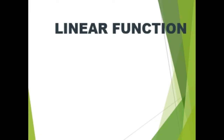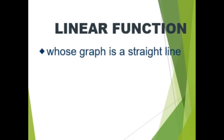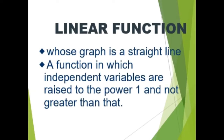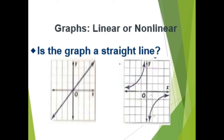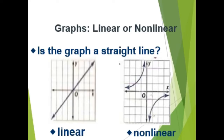Let's move on to linear function. A linear function is one whose graph is a straight line — a function in which independent variables are raised to the power of 1 and not greater than that. It can be written as f of x equals mx plus b. There are two ways to represent information on a graph: linear or non-linear functions. Looking at our first graph — yes, it is a straight line, so it is linear. The second graph is not a straight line, so it is non-linear.